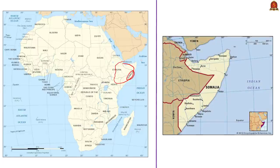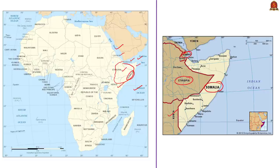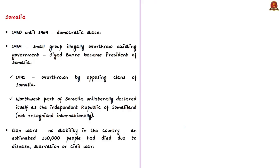The Horn of Africa represents countries like Ethiopia, Somalia, Djibouti, and Eritrea, and borders with the Red Sea, Gulf of Aden, and the Indian Ocean. Somalia shares borders with Ethiopia, Djibouti, and Kenya, and the coastline of Somalia faces the Gulf of Aden and the Indian Ocean. Now we'll also discuss the brief democratic history of Somalia — from 1960 until 1969, Somalia was a democratic state.